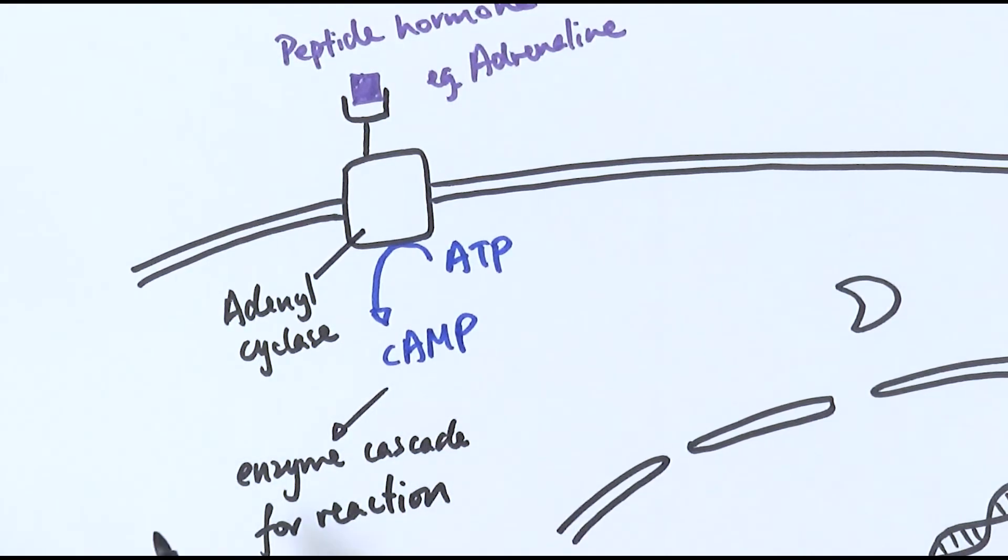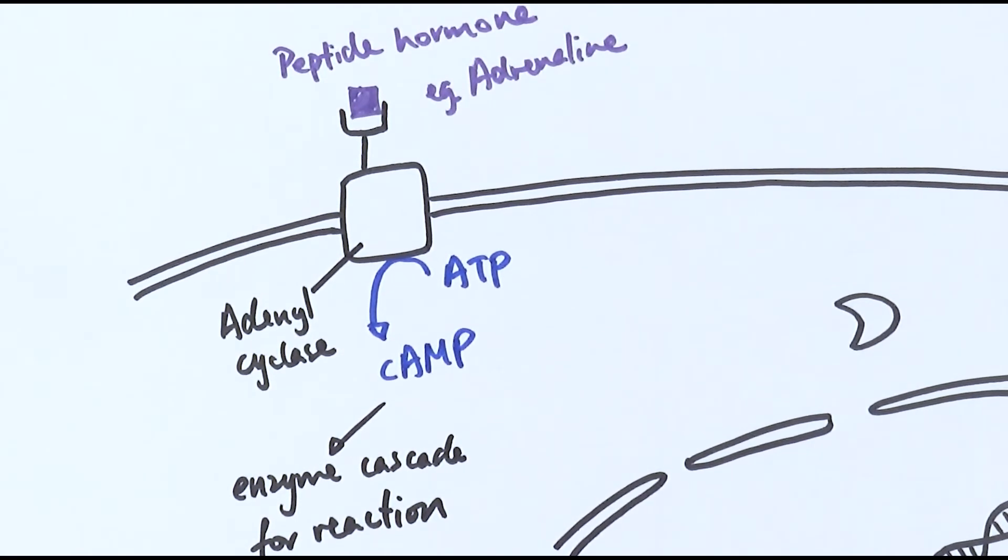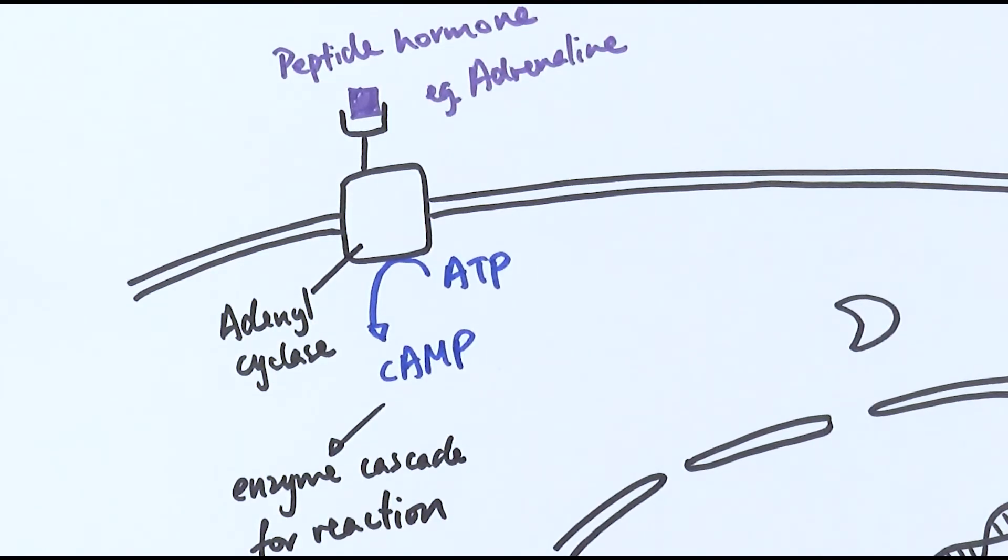Cyclic AMP, for example, could activate a protein kinase which is then activated to activate another enzyme, and then the enzyme activates another enzyme, et cetera, et cetera, until the enzyme that they activate can actually do the actual reaction that they want. For example it could be in this case converting glycogen into glucose for more respiration to occur. So this is the action usually of a peptide hormone.